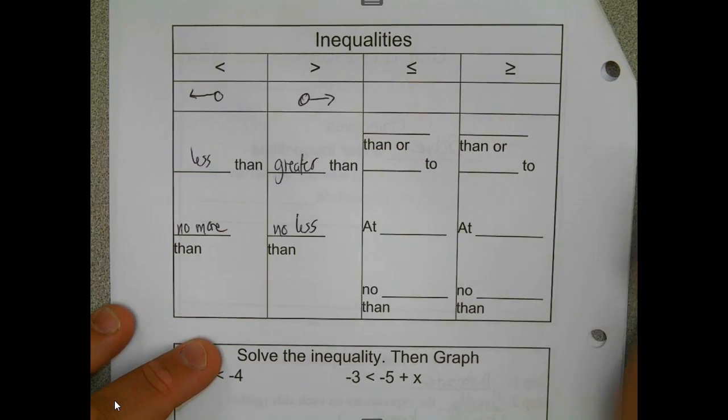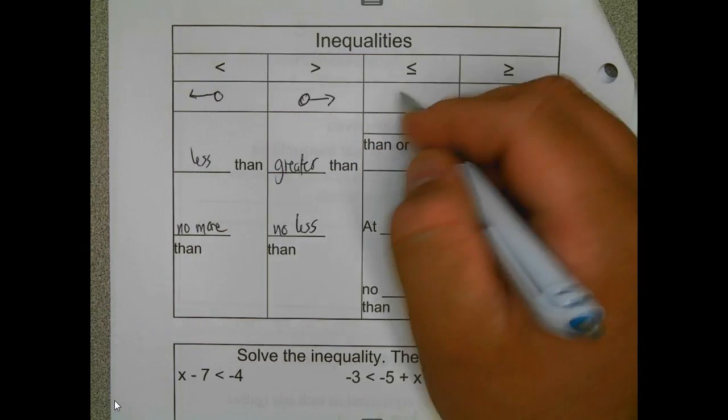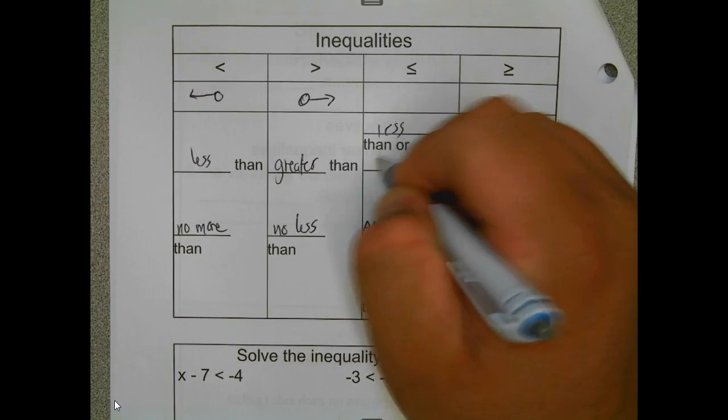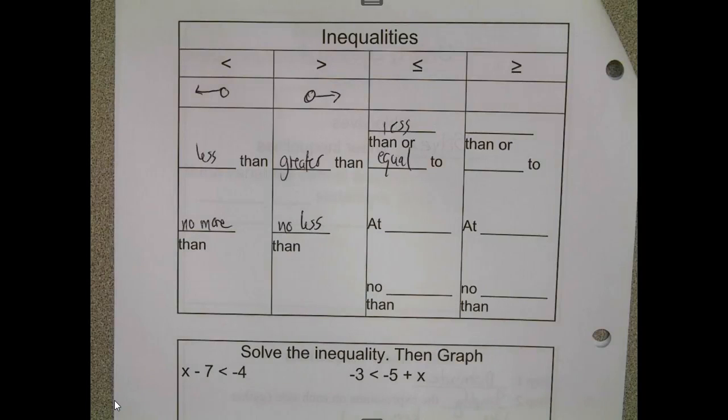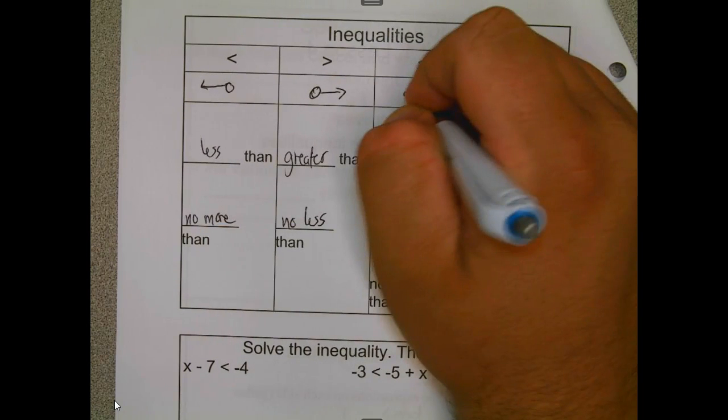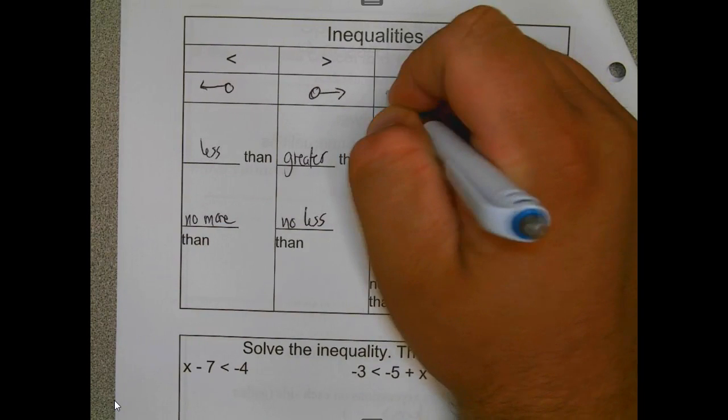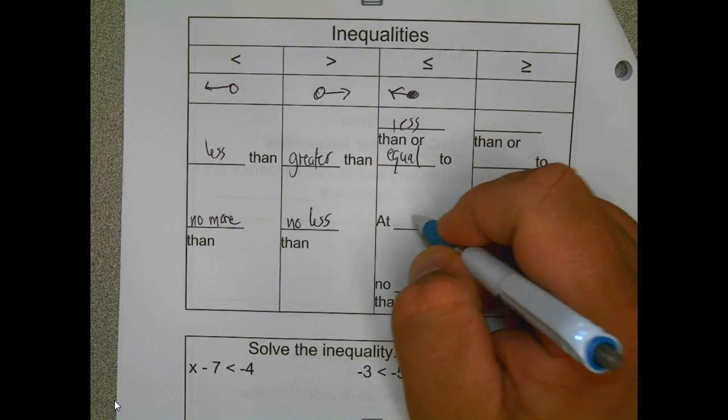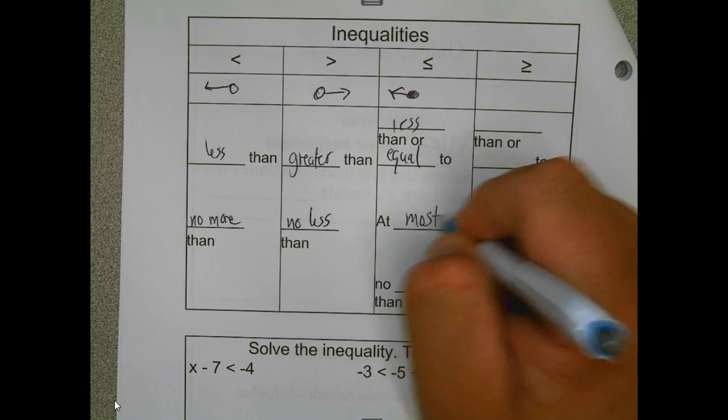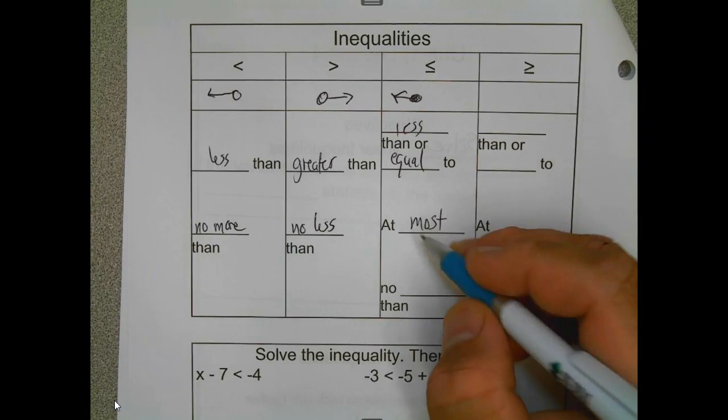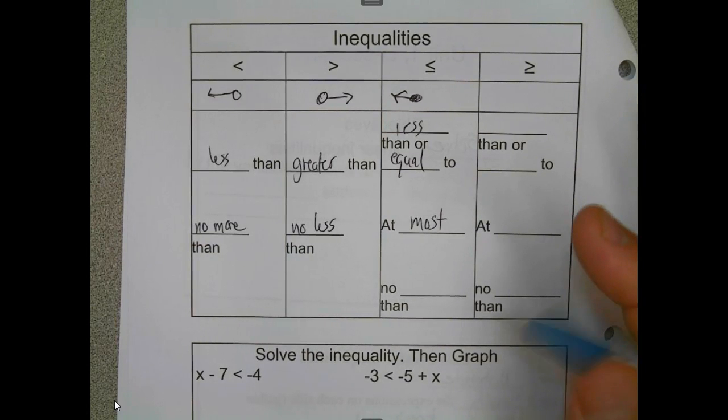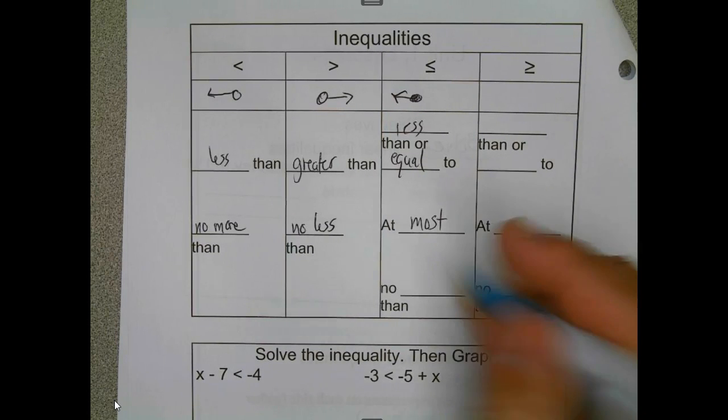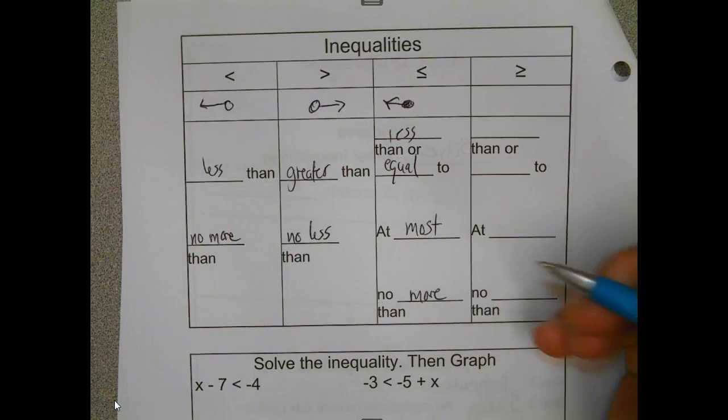Less than or equal to is a closed circle shaded to the left. This is also at most, and that's no more than. This can also be written as fewer.